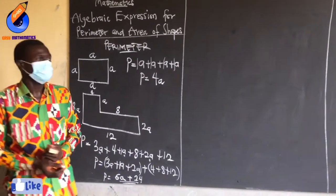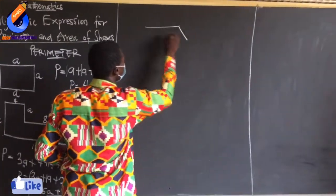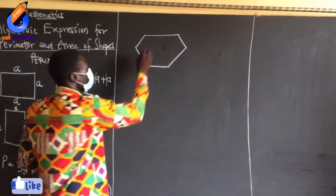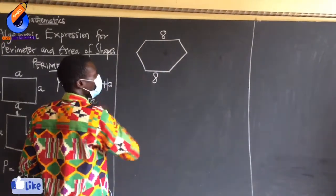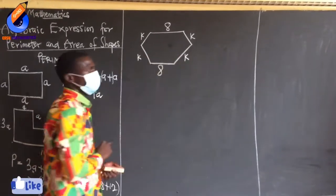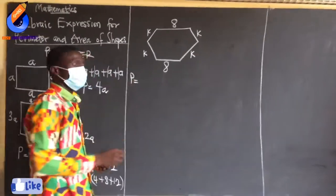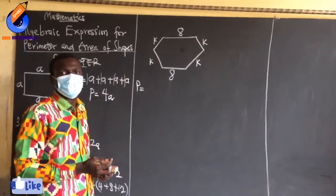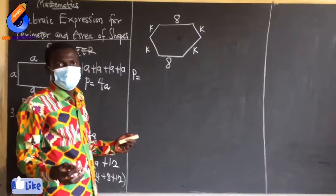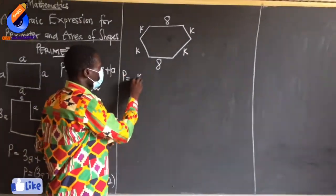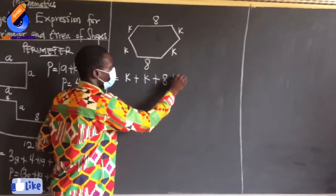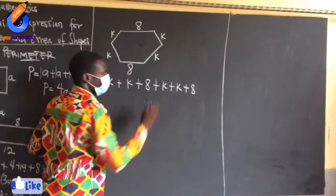Let's take the next shape and see. Let's say we have a rectangle with sides: 8, 8, K, K, K, and K. You have to find the perimeter. What is perimeter? Perimeter is the distance around the figure. So going around all sides gives me the perimeter. Starting from K: K plus K plus K plus K plus 8 plus 8.